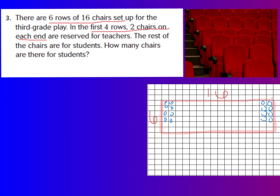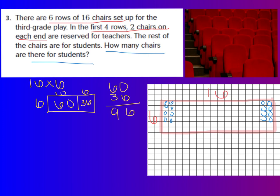So now, my question is asking, how many chairs are there for students? So, first thing is, I need to figure out how many chairs there are all together, which would be my 6 rows of 16. So I need to do a multiplication problem and figure out what 16 times 6 is. Well, I'm going to set up my box model for that. Okay, I know that there are 96 chairs all together.